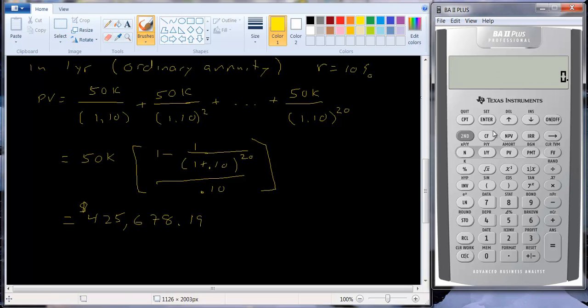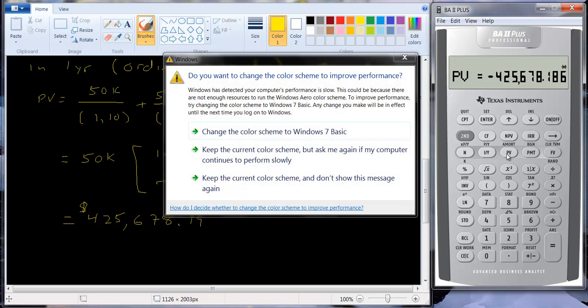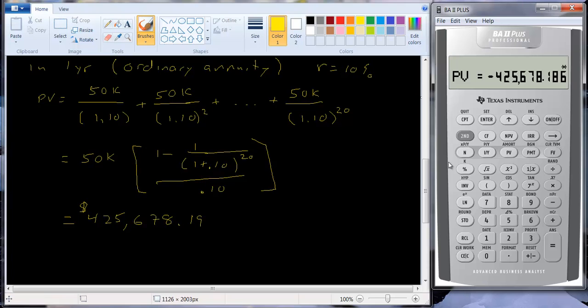Actually even easier, we can use the financial calculator. We can use the time value of money functions here. So let's hit second, clear TVM. And what do we know? We know the number of periods is 20. We know the interest rate is 10. And we want to put in the payment. That's that PMT key we haven't used yet. That's going to be 50,000. That's our payment. And we just compute the present value. We get 425,678.19. So we get the same answer.